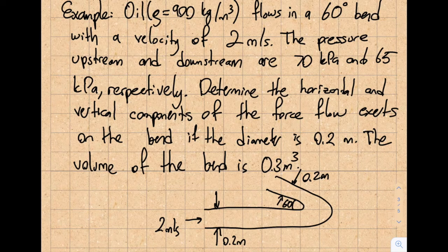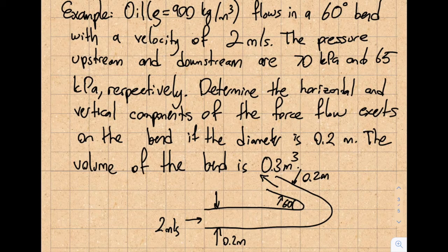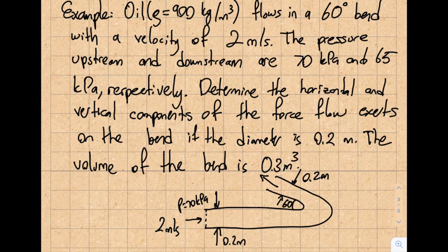Basically, we have a flow within a 60-degree bend. It enters from here and exits from the right. The pressure at the inlet is 70 kPa and at the exit the pressure is 65 kPa.